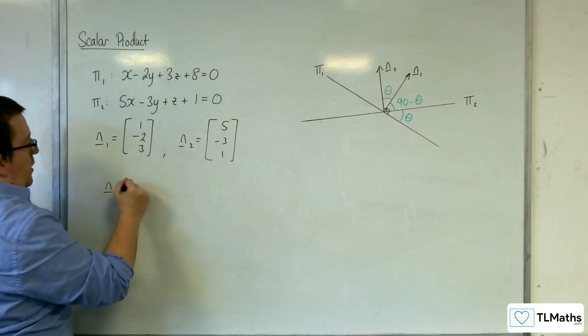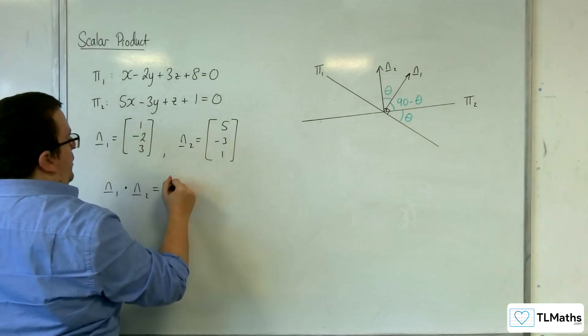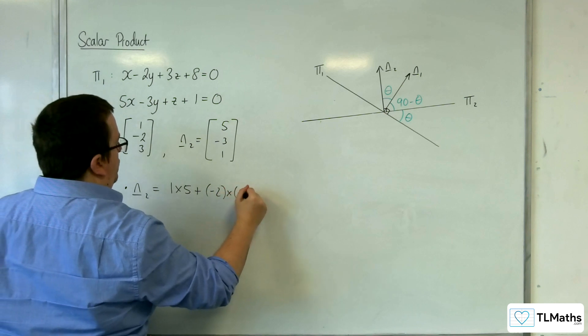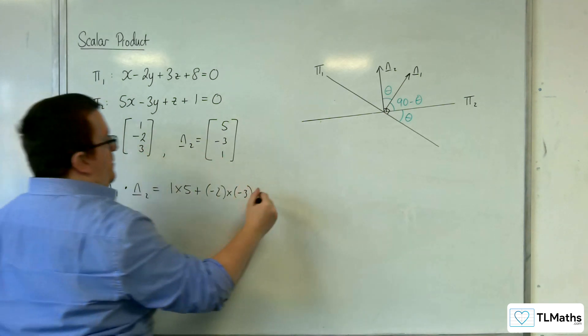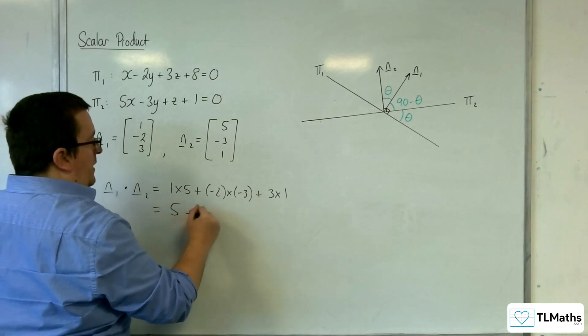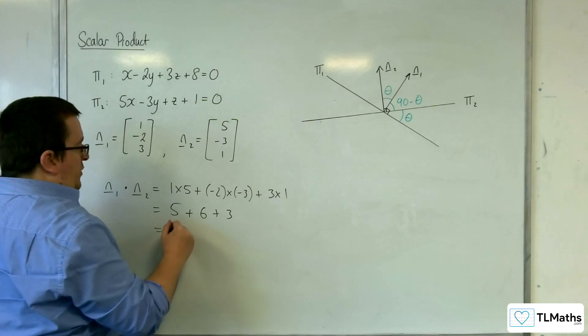So n1 dotted with n2 is going to be equal to 1 times 5 plus minus 2 times minus 3 plus 3 times 1. So 5 plus 6 plus 3, which is equal to 14.